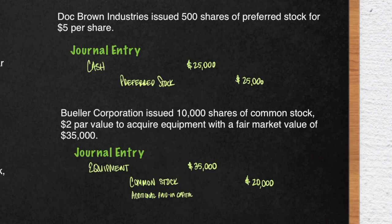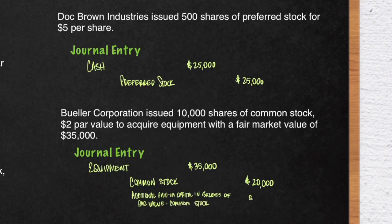The main point here is it's not always the case that a company will receive cash — they could also acquire such things as fixed assets in exchange for stock. Additional paid-in capital in excess of par value common stock, and again, that will be for $15,000.